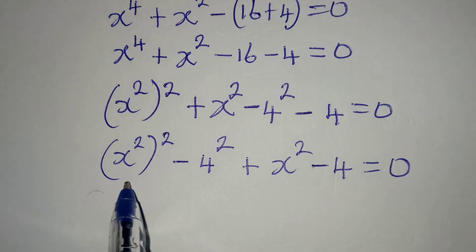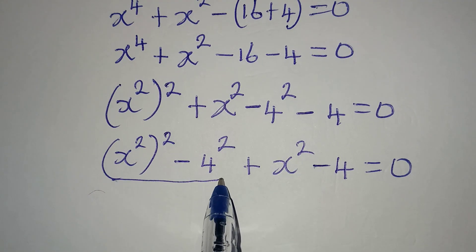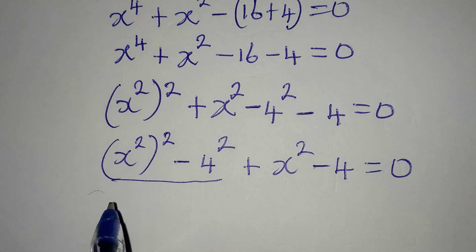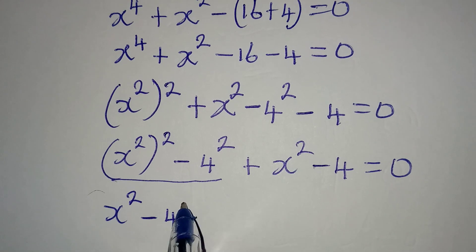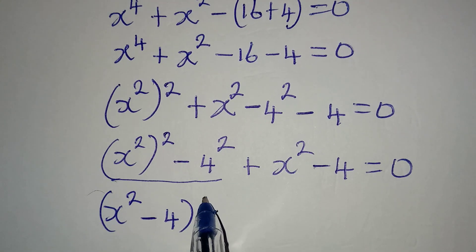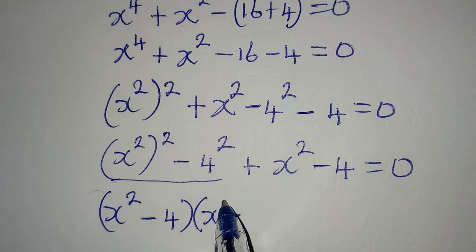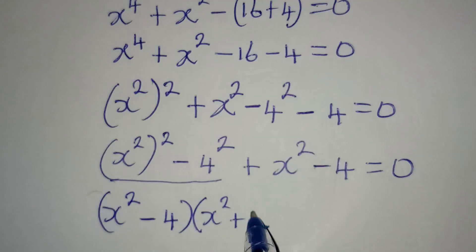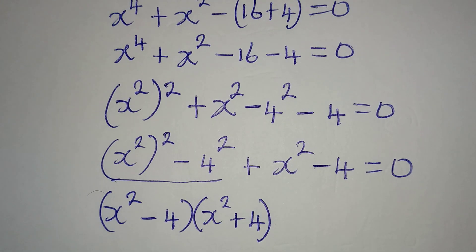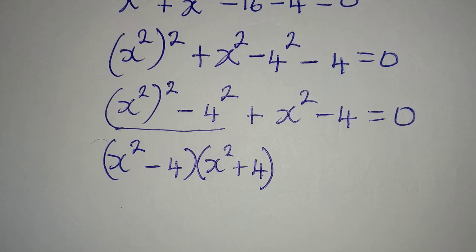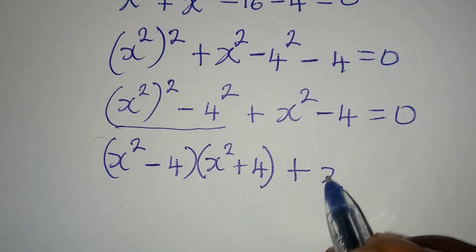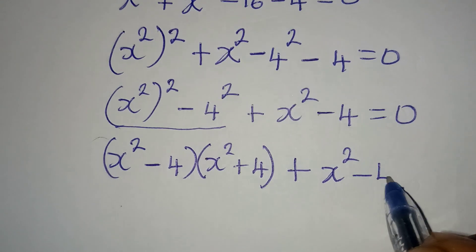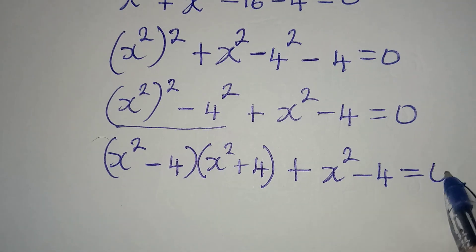For this one I can apply the difference of two squares, so I will have (x squared minus 4) in one bracket and in the other bracket (x squared plus 4). I have applied difference of two squares, and then I have plus this, which is x squared minus 4, equal to 0.